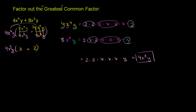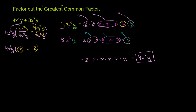Another way to see what's left over when you factor it out: we took out the common factor. What was left over in 4x to the fourth y after we took out 4x to the third y? The only thing left was this x. And when we factored 4x to the third y out of 8x to the third y, all we had left was the 2.